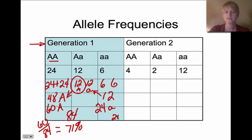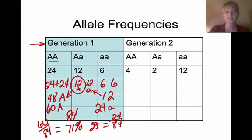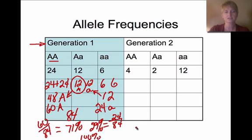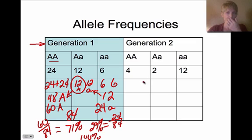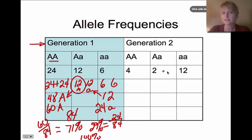To find the frequency of capital A, we divide 60 by 84, giving 71% dominant alleles. For recessive, 24 divided by 84 gives 29%. Adding those together equals 100%, which confirms our math is correct. So in generation 1: 71% dominant allele, 29% recessive allele.